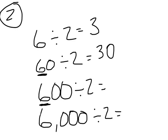600 divided by 2 — that's 6 hundreds divided by 2. If I divide 6 hundreds by 2, how many hundreds is that? It's 3. Write that number in standard form — it's 300. What about 6,000 divided by 2? If I divide 6 thousands by 2, how many thousands is that? It's 3. Write that number in standard form — it's 3,000.